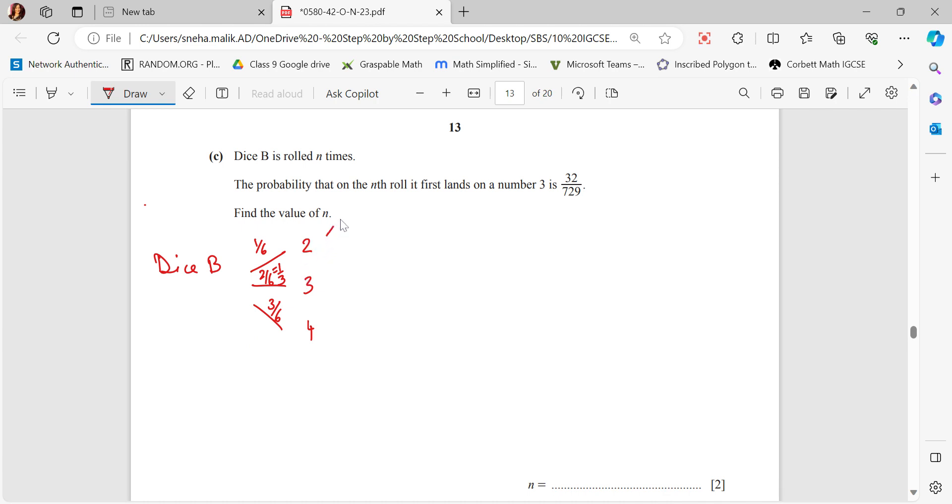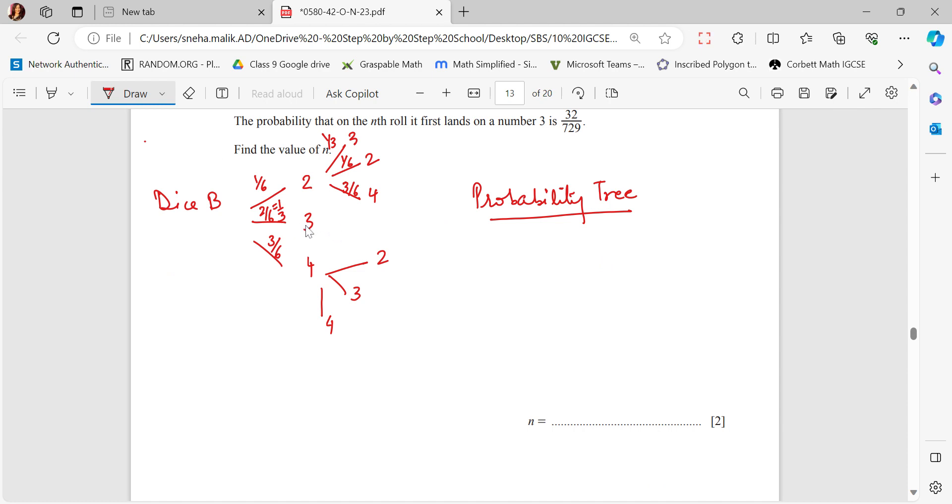If on the first roll 2 is coming, in the second roll probably a 3 can come, a 2 can come, or a 4 can come. Similarly, if I just make my probability tree, the same thing happens here again too. I'm writing the corresponding probabilities. This is my probability tree. The probability tree suggests that for sure n, the number 3 is not coming on the first roll. Had it come on the first roll, the probability would directly be 1 by 3 and there was no need to go to other throws. But surely, on the first roll, 3 is not coming.